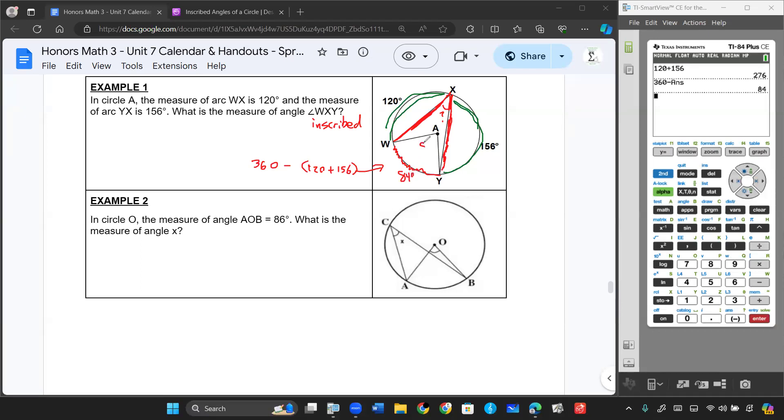And I'll also put 84 in the angle WAY in the center. Those are going to be the same. Now, to get the inscribed angle, we're going to take half of that. So we can do 84 divided by two, and you'll get your inscribed angle, which is going to be 42 degrees. So I know that the measure of angle WXY is 42 degrees.